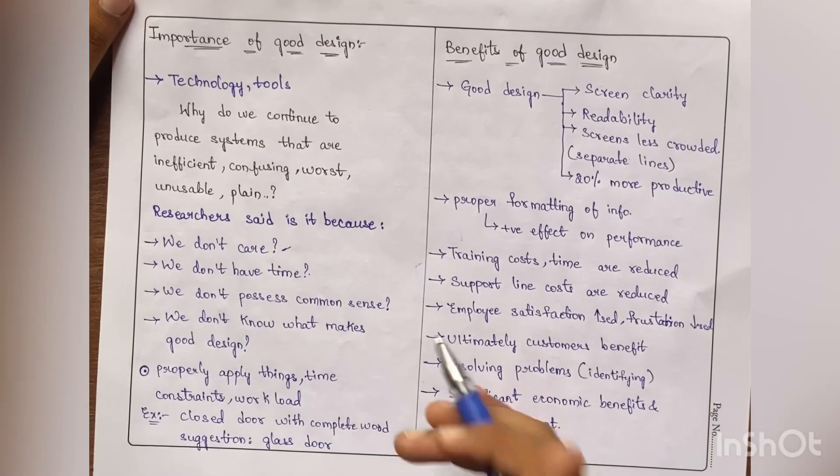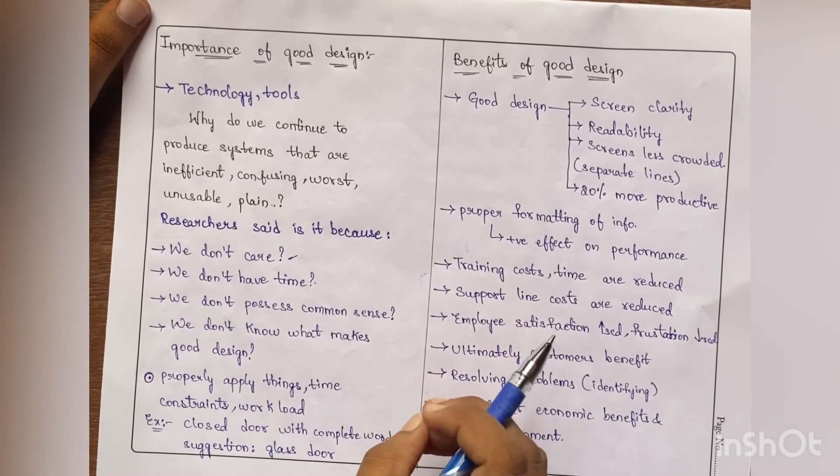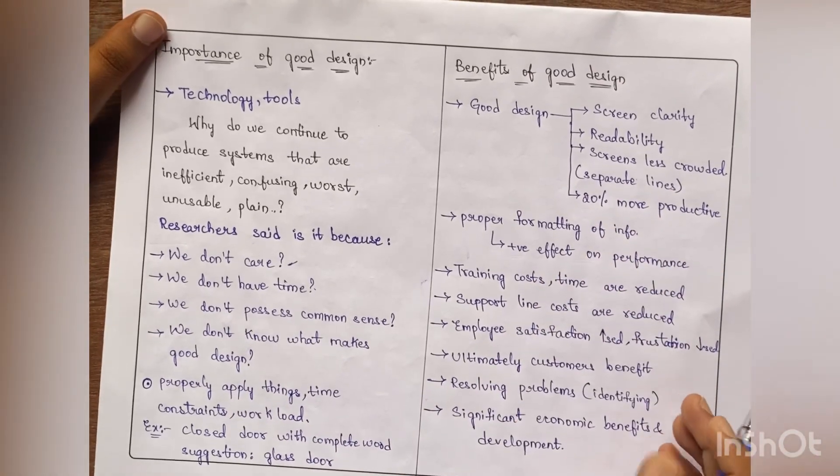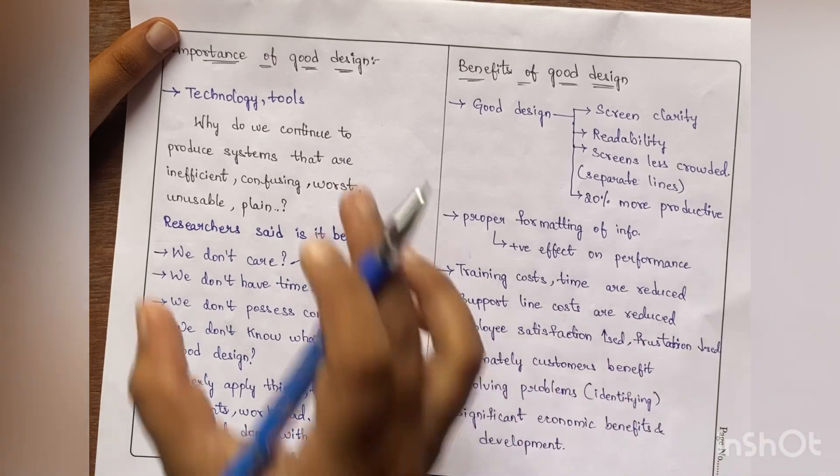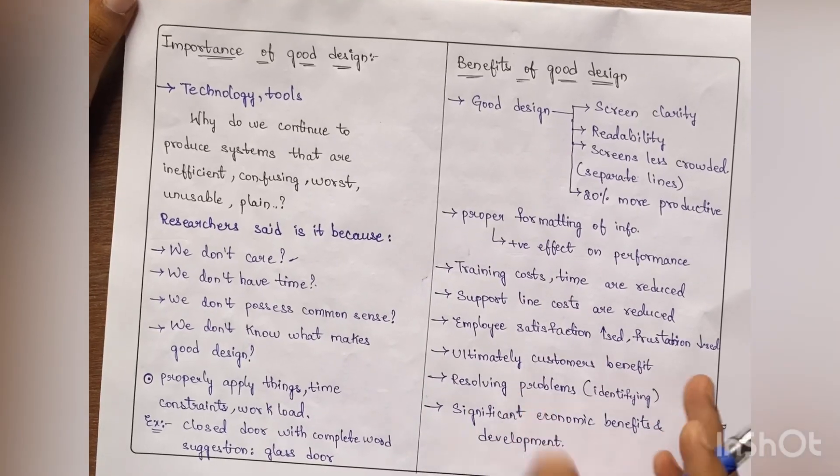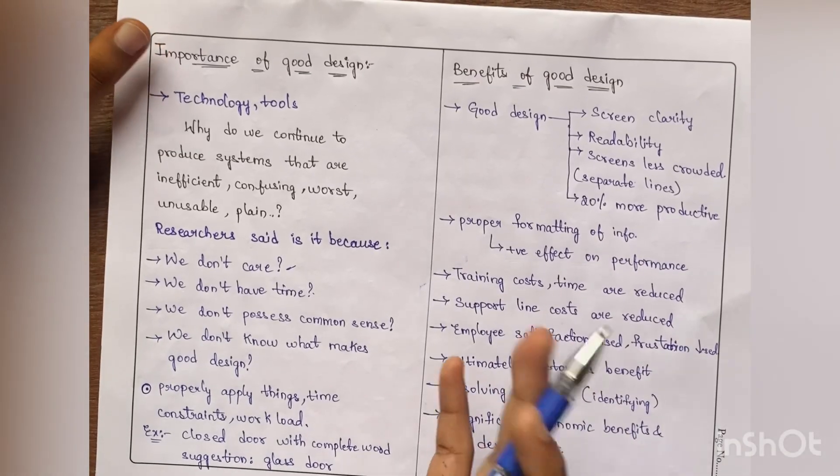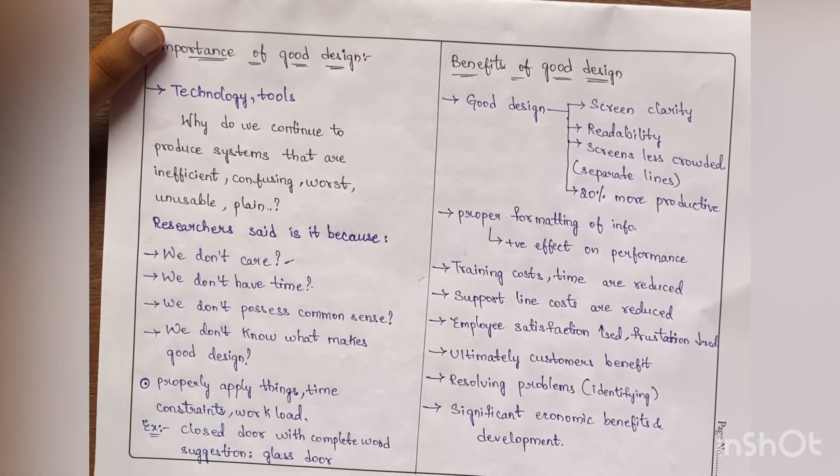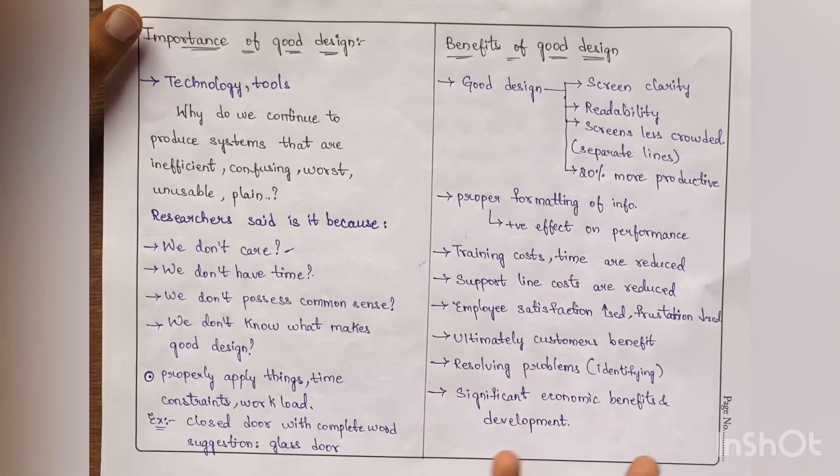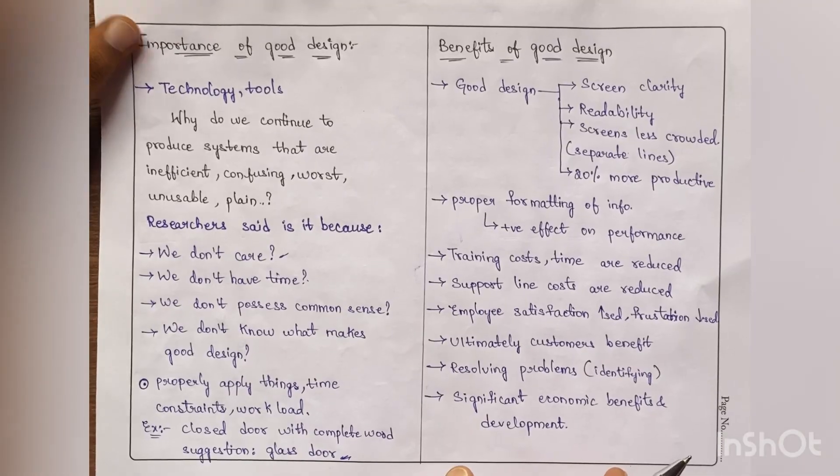When they got feedback, they said people have time constraints, workloads. Because of those things, they are unable to properly apply things. Because of that reason, they are producing inefficient interfaces. That means they are unable to give time for the good design. They are not giving sufficient time for the designing part. Because of that reason, when design is not proper, they cannot make a good interface. Because of that reason, people get confused, the whole work gets wasted. So for example, here they said a closed door with complete wood, what is the use of it? Suggestion is like glass door, so we can use a glass door for a closed purpose.